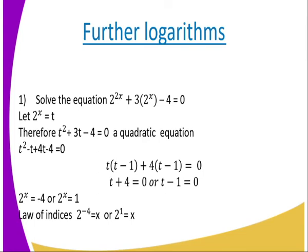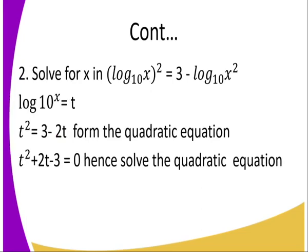Another example involves forming quadratic equations from further logarithms. Solve the equation: 2 raised to power 2x plus 3 times 2 raised to power x minus 4 equals 0. We let 2 raised to power x equal t, so the equation becomes t squared plus 3t minus 4 equals 0. Solving this quadratic gives t equals 1 or t equals negative 4, and therefore 2 raised to power x equals 1 or 2 raised to power x equals negative 4.